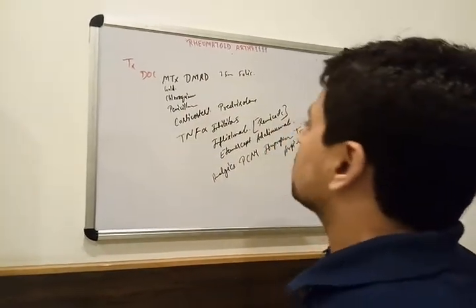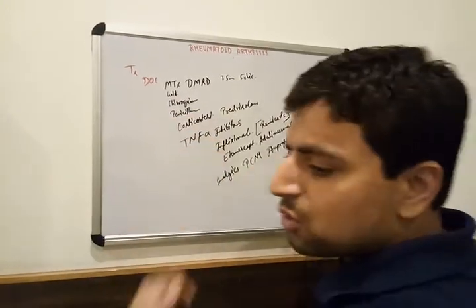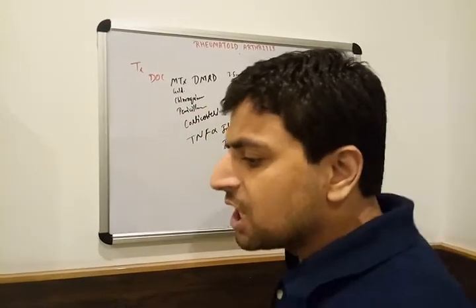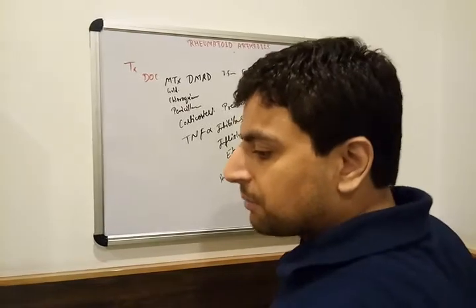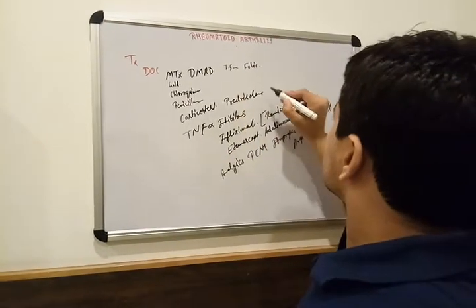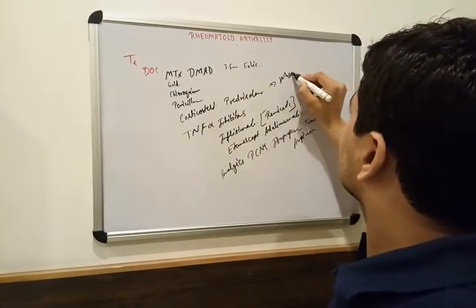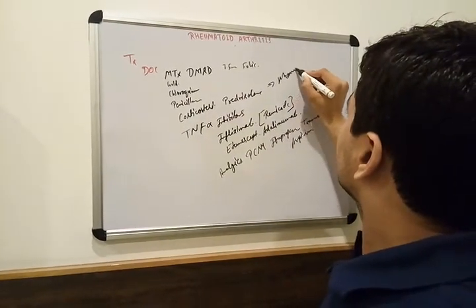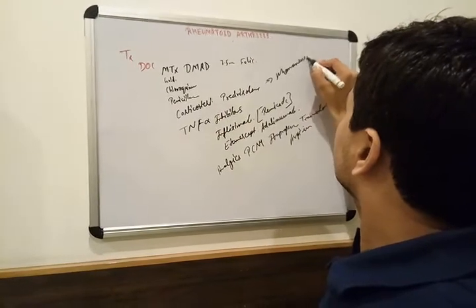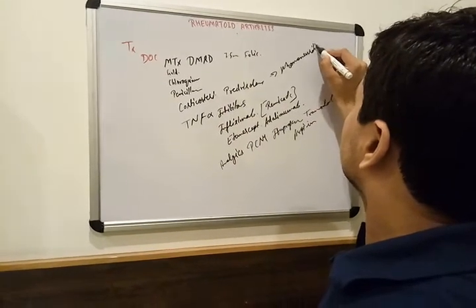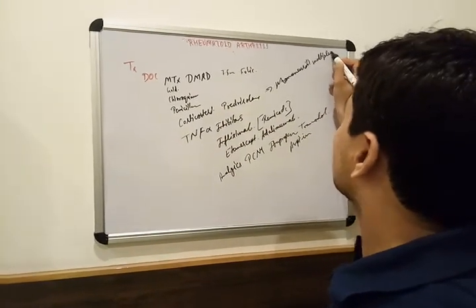The indication of corticosteroids and prednisolone in Rheumatoid Arthritis is mononeuritis multiplex.